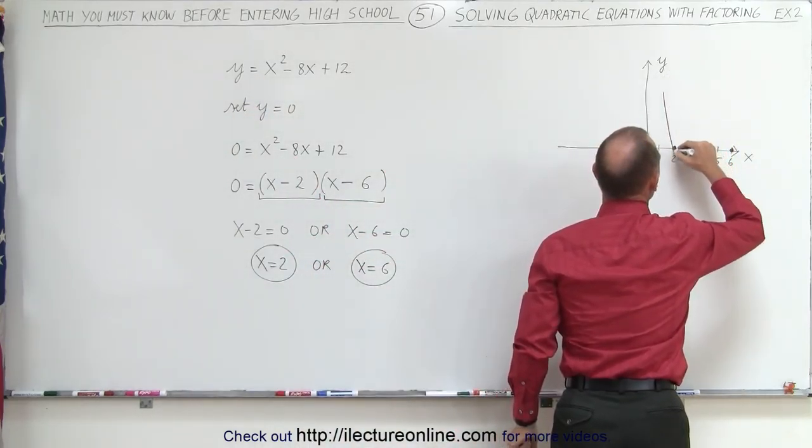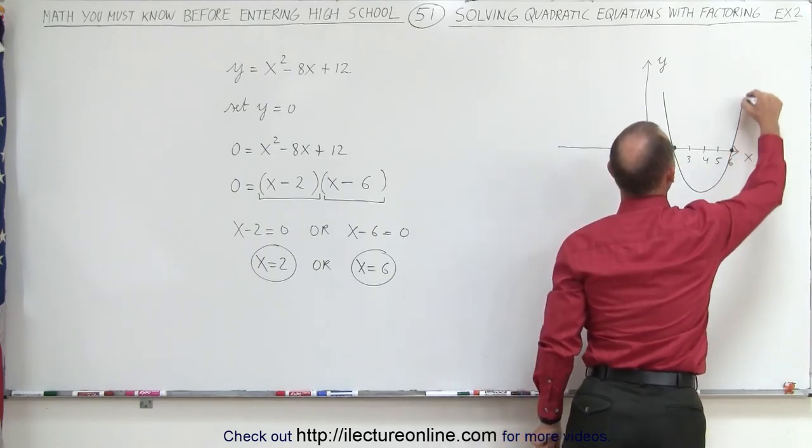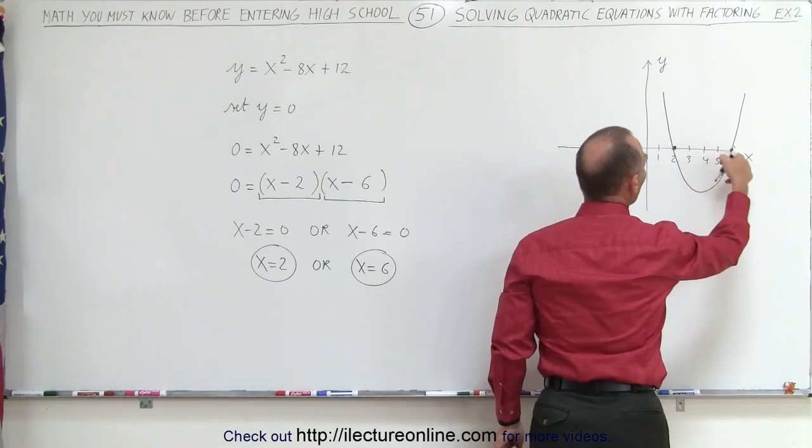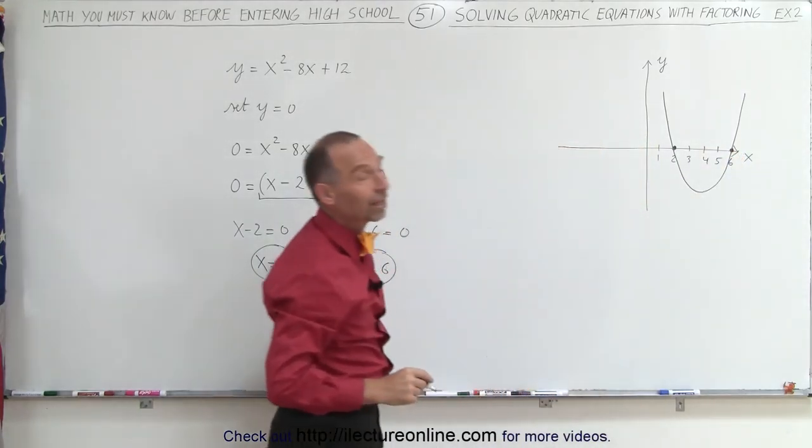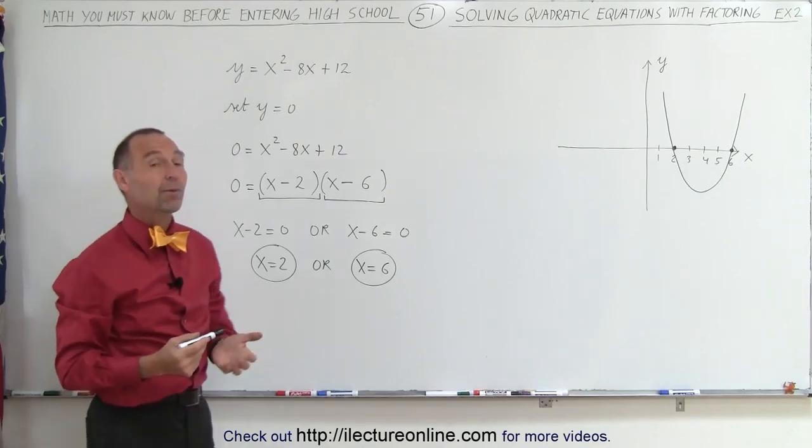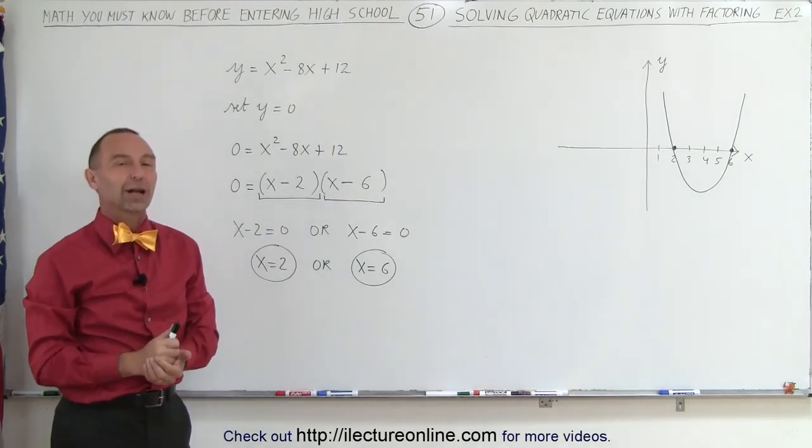So the graph will look something like this. And these are the solutions. The solutions are the points where the parabola crosses the x-axis at x = 2 and x = 6. And that's what we mean by solving a quadratic equation.